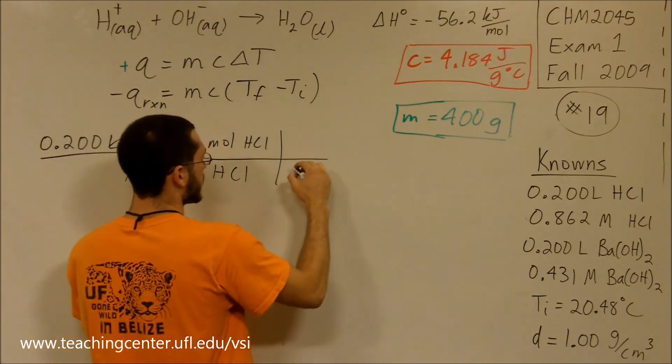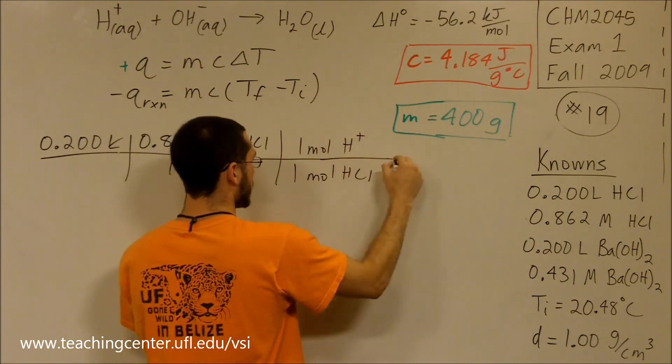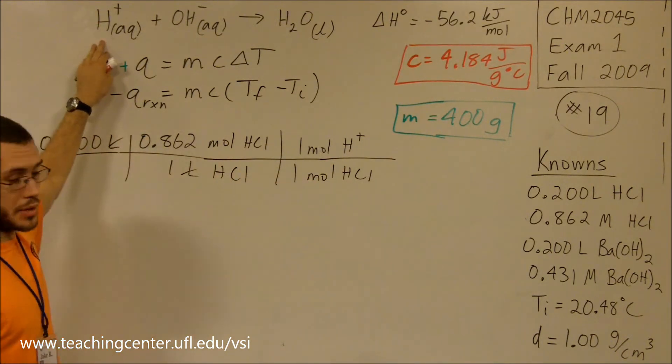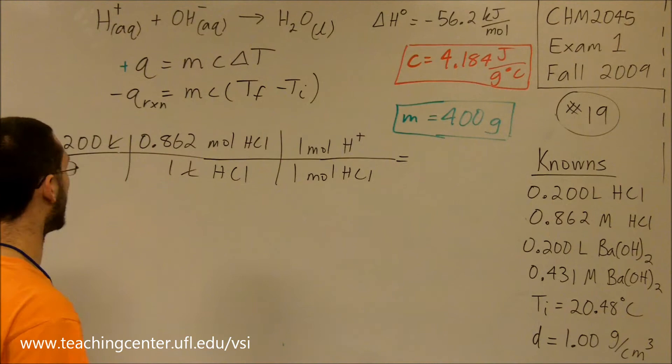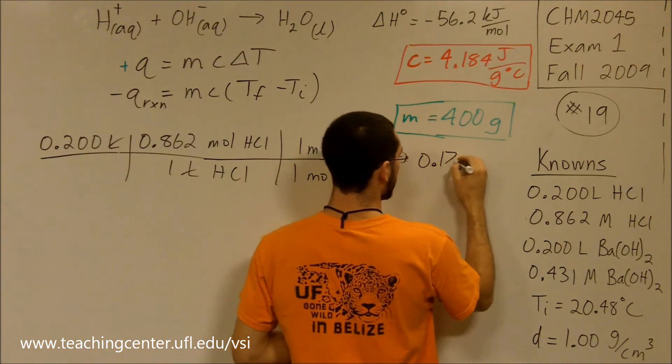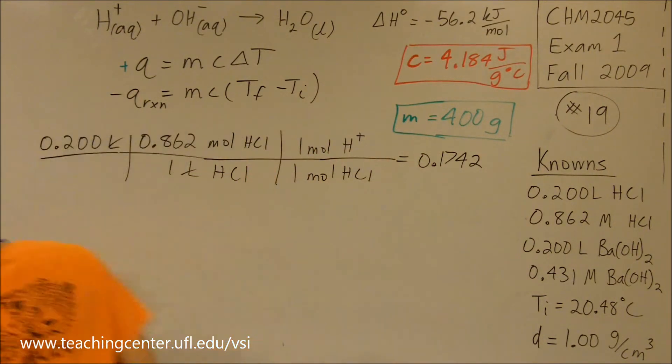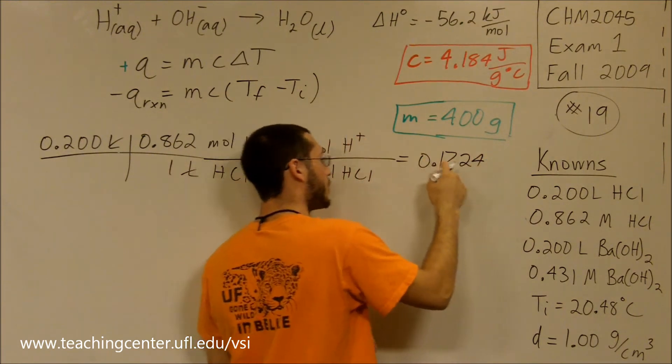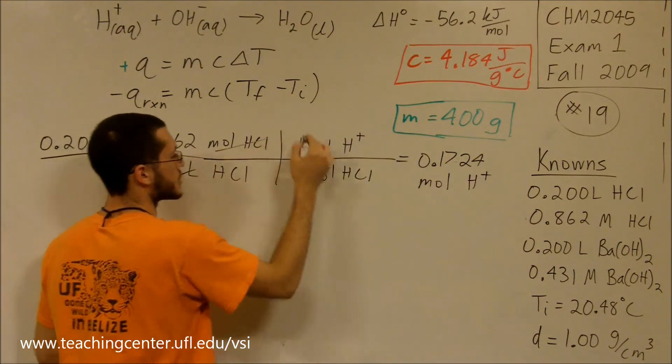I'm going to continue this conversion. For every one mole of HCl, I have one mole of H⁺. This tells me how many moles of H⁺. If I punch this out, I know how many moles of H⁺ I have. This comes out to be 0.1724 moles of H⁺. This is moles HCl, cancel moles of HCl.